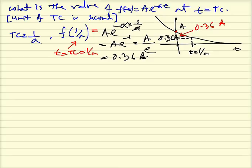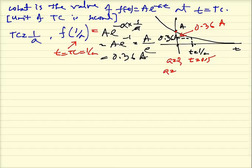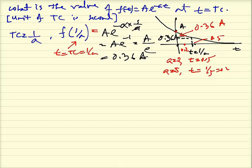In our previous examples, for a = 2, the time constant is 1/2 = 0.5 seconds — meaning at t = 0.5s, the signal reaches 0.36A. For a = 5, the time constant is 1/5 = 0.2 seconds — so at t = 0.2s, the signal already reaches 0.36A, demonstrating that a larger 'a' results in faster decay.